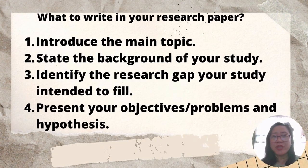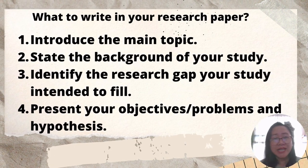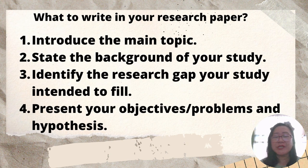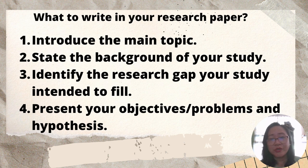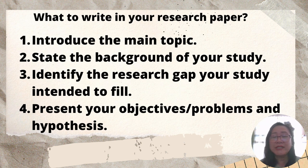Going back to my questions from earlier — how to write and what to write in your research paper — these are now the answers. To sum it up: first, introduce the main topic. Second, state the background of your study; you may include some related literature or studies which are very related to your topic, but do not put all the related literature because we have a separate chapter for that. Third, identify the research gap your study intended to fill; you may also write the significance of your study. And finally, present your objectives, problems, and hypotheses.